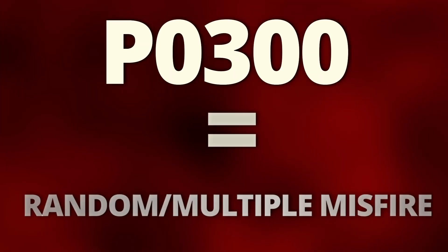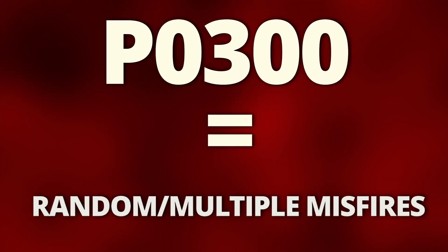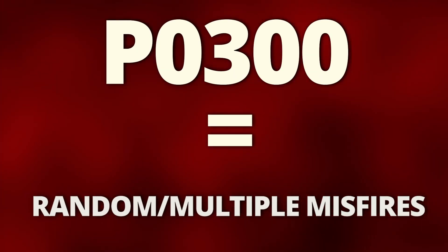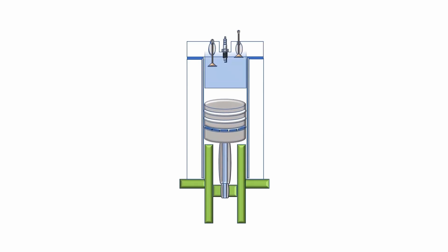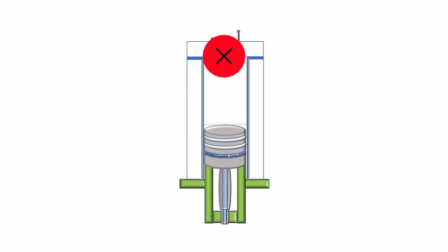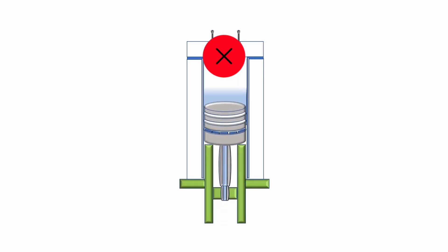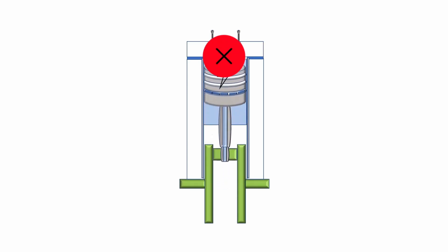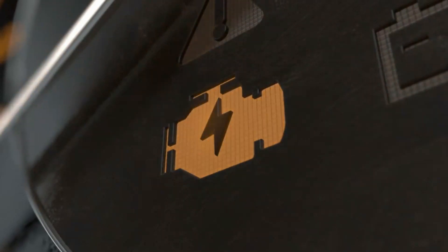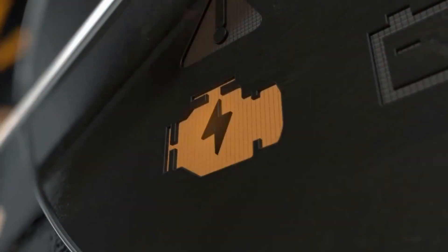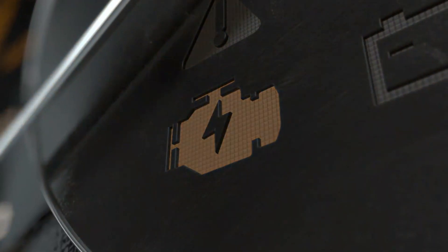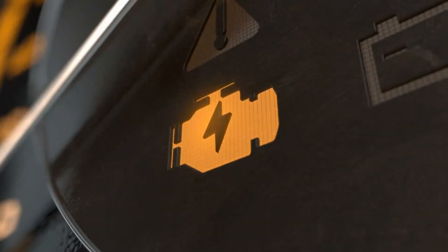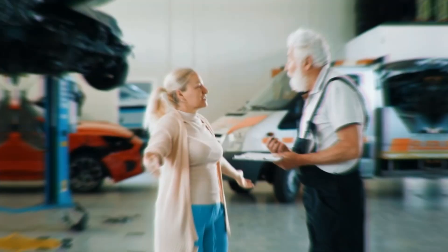The P0300 code means there are random or multiple misfires occurring in the engine. This basically means there's something preventing the combustion chambers from igniting the air-fuel mixture. When the cylinders misfire, the engine control module turns on the blinking check engine light and sets a diagnostic code.